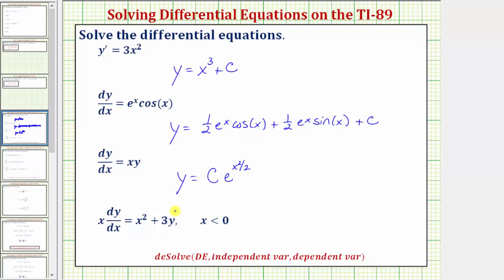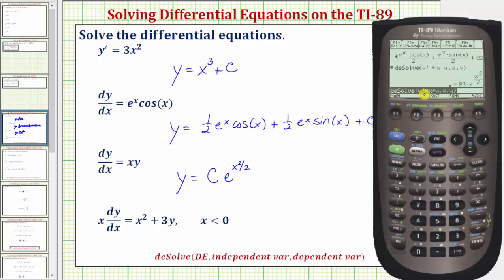Finally, for the last differential equation, let's go ahead and just edit this previous entry. So I'll press the right arrow, then the left arrow, until the cursor is to the left of the comma, then use this back arrow or delete key to remove the previous differential equation.